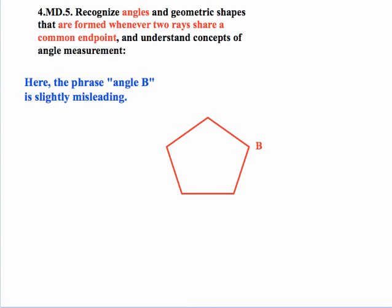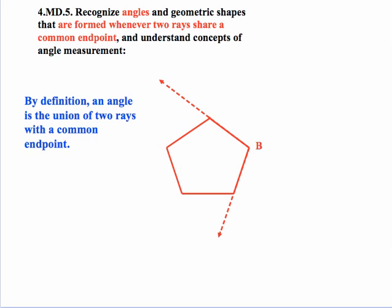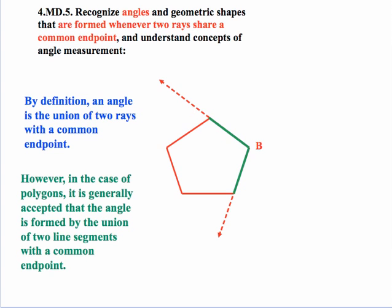Students are going to experience angles as part of polygons. Now here the phrase angle B is slightly misleading because by definition an angle is the union of two rays with a common endpoint. But polygons have line segments for their sides not rays. So in the case of polygons it's generally accepted that the angle is formed by the union of two line segments with a common endpoint like we have here.